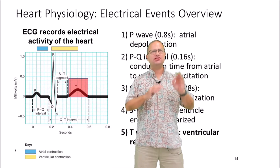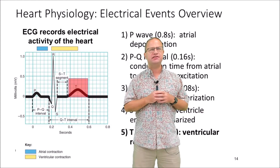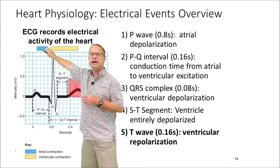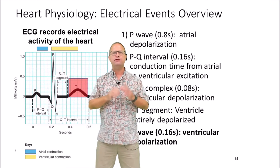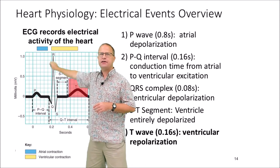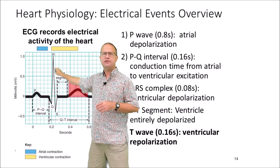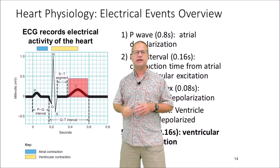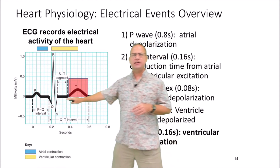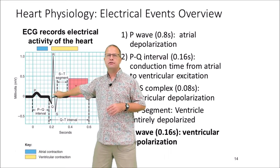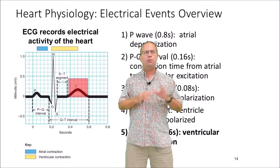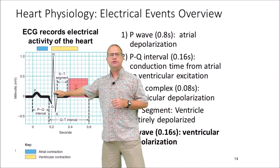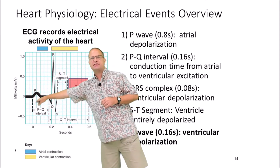Depolarization does not necessarily equate to contraction — they don't occur at precisely the same time. We had our P wave for atrial depolarization, but atrial contraction doesn't happen until we're into the P wave itself. Same with ventricular contraction: ventricular depolarization was our QRS complex, lasting about 0.08 seconds, but ventricular contraction goes on for much longer — up into the point where we're starting to have ventricular repolarization. We can see three events electrically: atrial depolarization, ventricular depolarization, and ventricular repolarization. Atrial repolarization is not visible because it's such a small electrical event next to the large ventricular depolarization, which masks it.